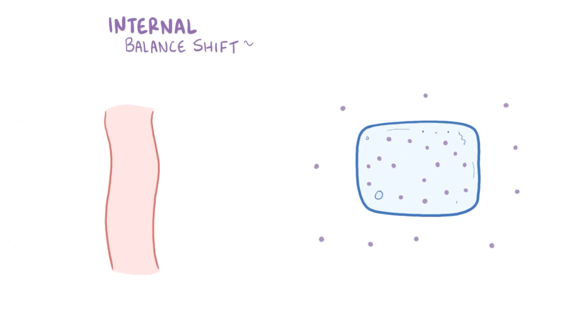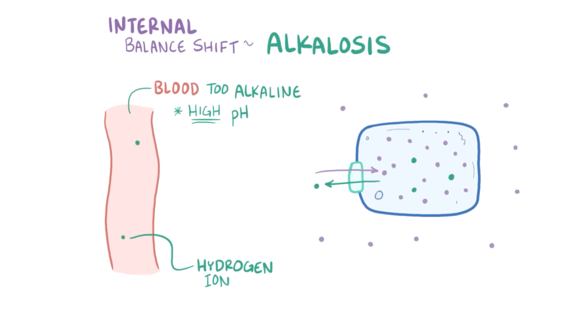Another cause of an internal potassium balance shift could be an alkalosis, which is when the blood becomes too alkaline, in other words there's a lower concentration of hydrogen ions, meaning a higher blood pH. One way the body can decrease blood pH is by moving hydrogen ions out of cells and into the blood. To accomplish this, cells use a complex series of multiple ion channels, exchangers, and pumps to exchange hydrogen ions for potassium ions across the cell membrane. So, in order to help compensate for an alkalosis, hydrogen ions leave cells and potassium ions enter the cells and leave the blood, resulting in hypokalemia.